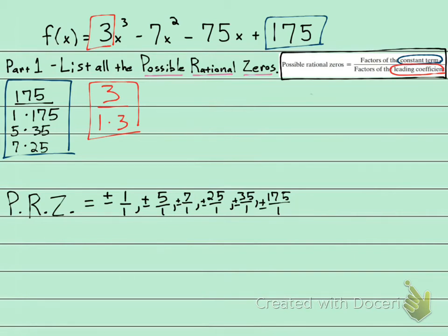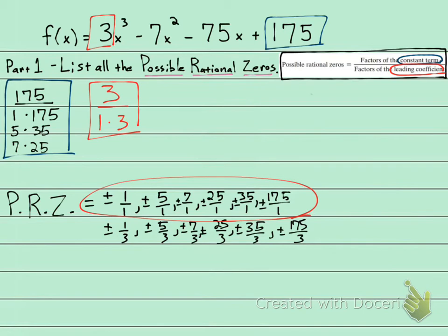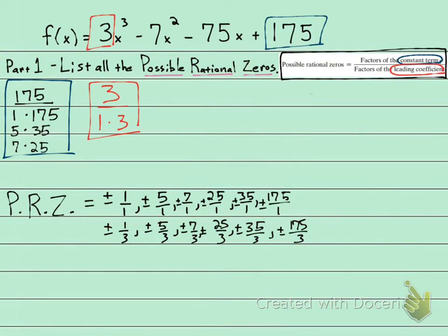Now let's put them over 3 — the same numbers over denominator 3: plus or minus 1 over 3, plus or minus 5 over 3, plus or minus 7 over 3, plus or minus 25 over 3, plus or minus 35 over 3, and plus or minus 175 over 3. Now reduce any fractions you can. The top row reduces since anything over 1 is just itself, so we write those as integers. The fractions over 3 don't reduce.